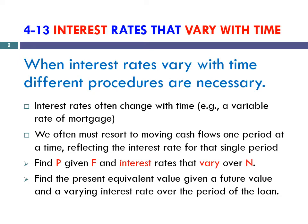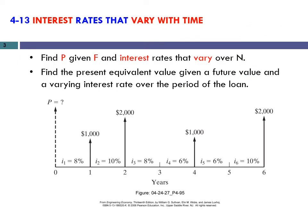For these kinds of calculations, let's consider this example. The interest rate in the first year is 8%, in the second year it is 10%, then 8% again, then 6% for two years, and 10% in the sixth year. And as you can see, we have cash flows at years one, two, four, and six, and we are asked to find the present value.